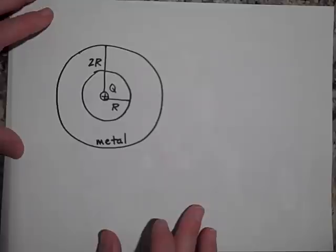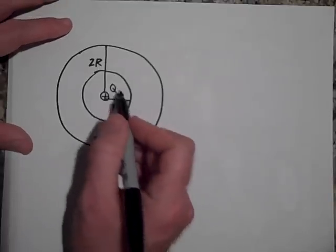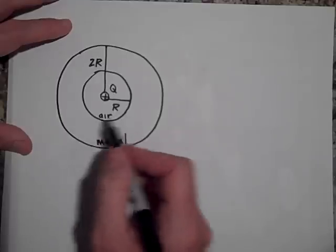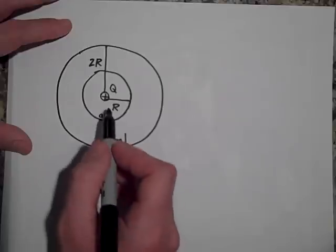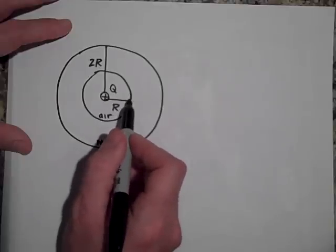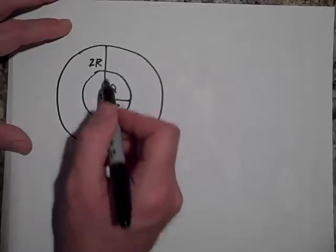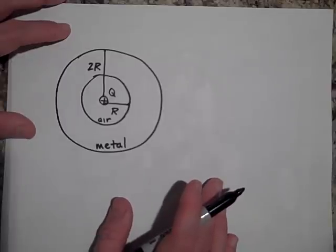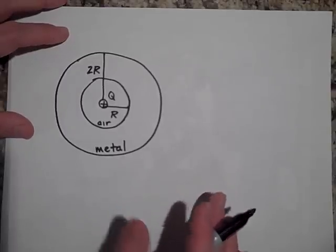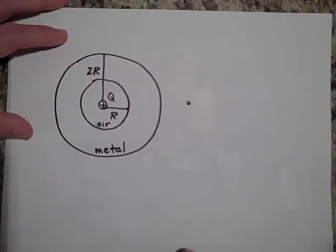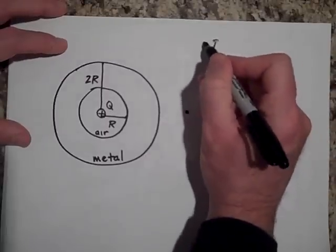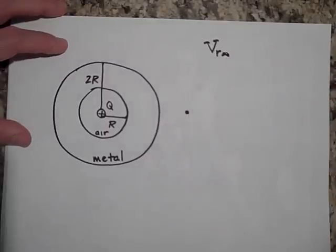Okay, the next thing. We have here's a charge Q, and this is air. It's surrounded by this hollow metal sphere. The inside surface of the sphere is R and the outside surface of the sphere is 2R. Okay, could you tell me what the potential is at a distance R relative to infinity? What's the potential at R relative to infinity? Go ahead and pause and see if you can get that.